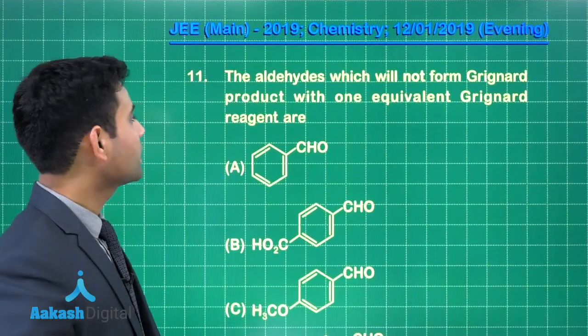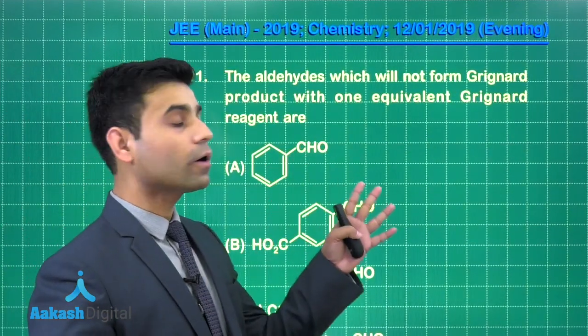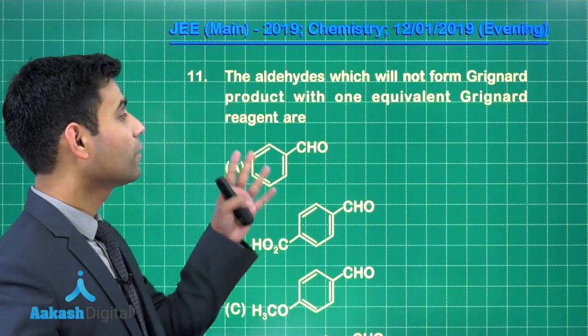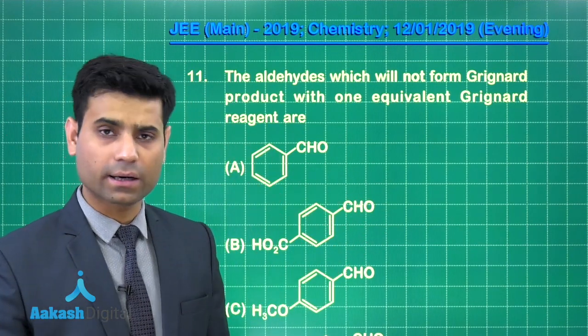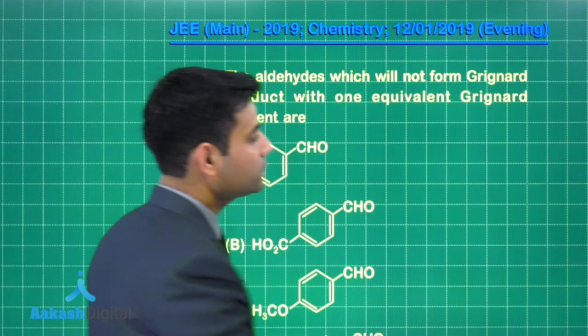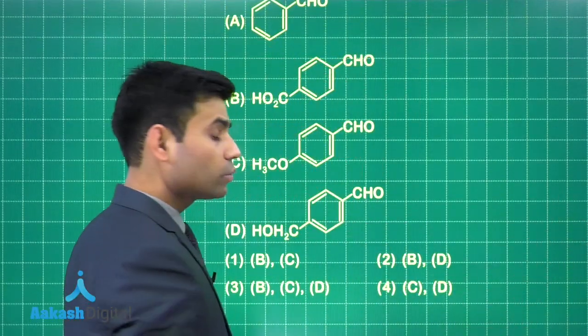This is the next question we have which says the aldehydes which will not form Grignard product with one equivalent Grignard reagent R. Here we have four options, A, B, C and D.